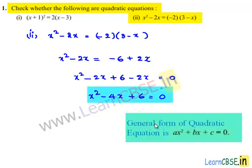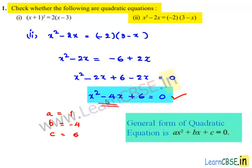We have the general form of a quadratic equation as ax² + bx + c = 0. Comparing x² - 4x + 6 = 0 with the standard equation, we get a = 1, b = -4, and c = 6. So the given equation is a quadratic equation.